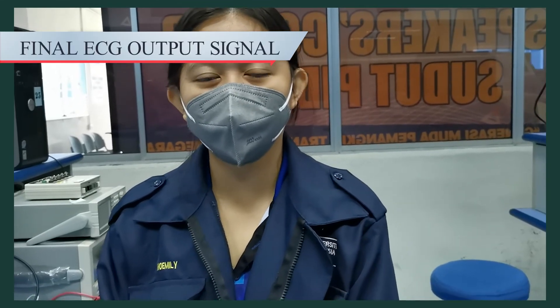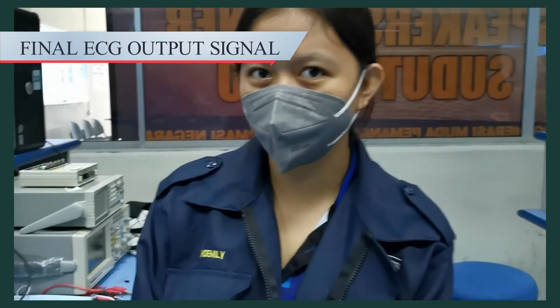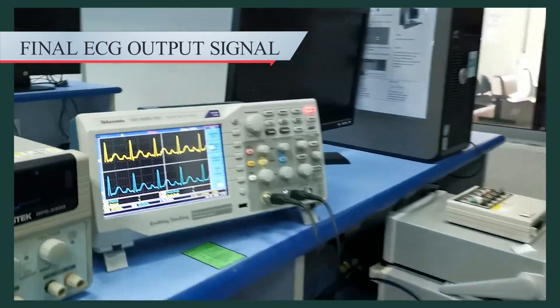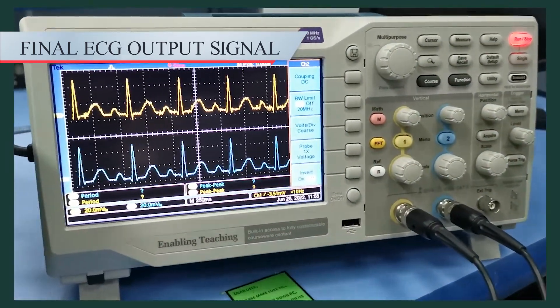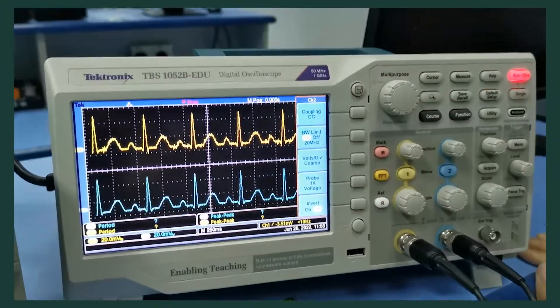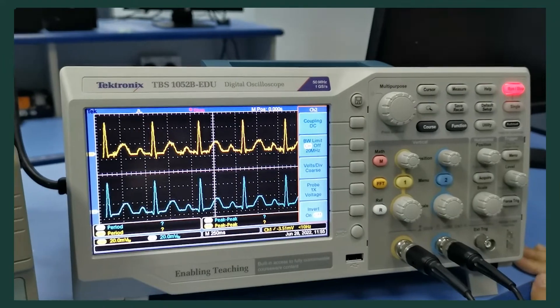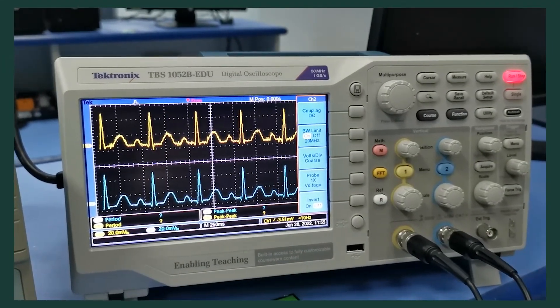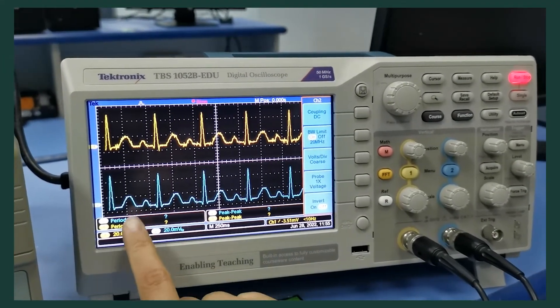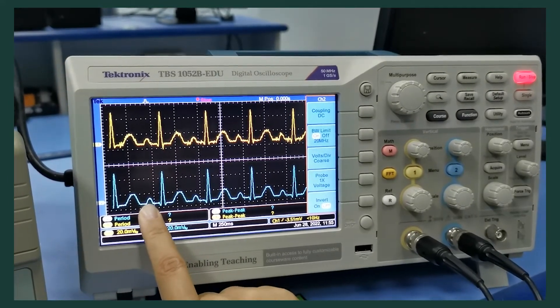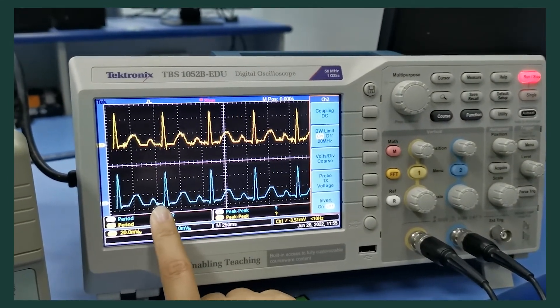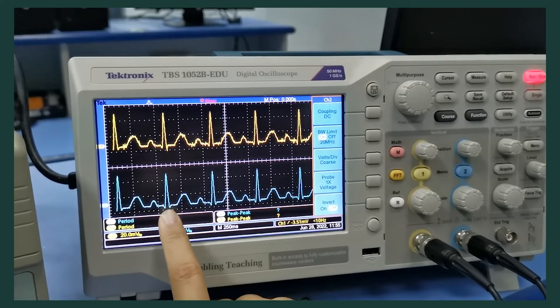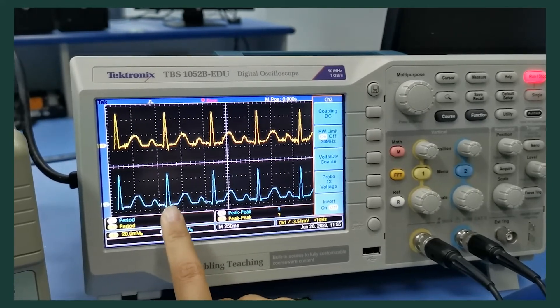My name is Nomi Lee and I will explain our output signal on the oscilloscope. We use a digital oscilloscope to present our final ECG signal. As we can see, we have the P wave, the Q wave, the R wave, the S wave, and the T wave.